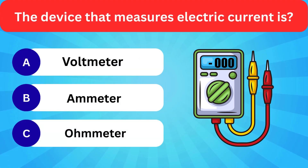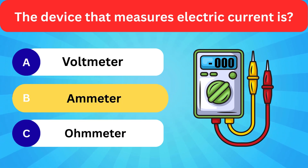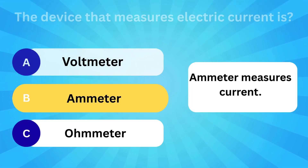Options: Voltmeter, Ammeter, Ohmmeter. Correct answer is ammeter. Ammeter measures current.